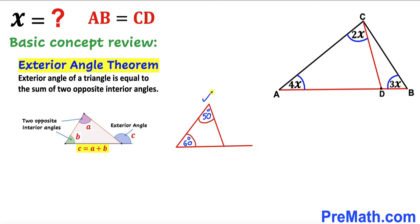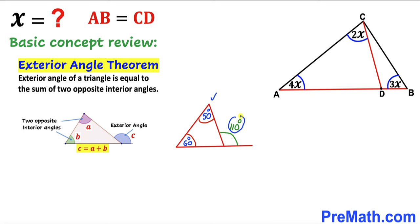Here's an example: the exterior angle equals the sum of the two opposite interior angles, 50 degrees plus 60 degrees. Adding these gives us 110 degrees. So in this example, 110 degrees is the exterior angle.